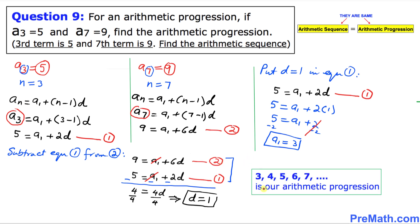Thus our arithmetic progression turns out to be 3, 4, 5, 6... The first term, a sub 1, is 3, and every subsequent term is obtained by adding the common difference of positive 1. That is our answer for question 9.